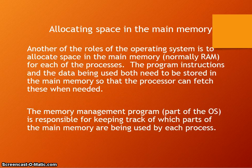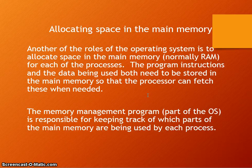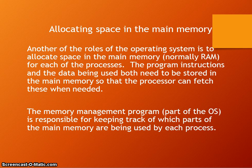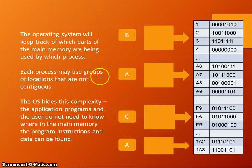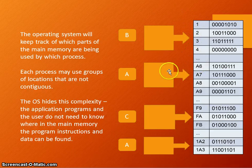Operating systems also allocate space in main memory — the role of the operating system is to allocate RAM space. Programming instructions and data need to be stored in main memory so the processor can fetch and execute them. Memory management keeps track of which parts of main memory are being used by each process. For example, process B may be allocated memory locations 1 to 4, process A may get A6 to A9, and so on. Memory locations are usually given with a hexadecimal address.